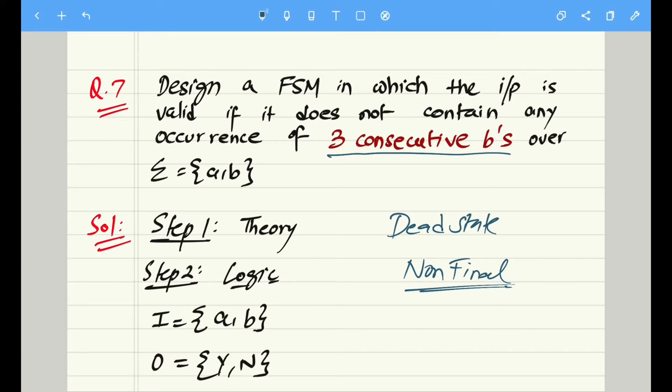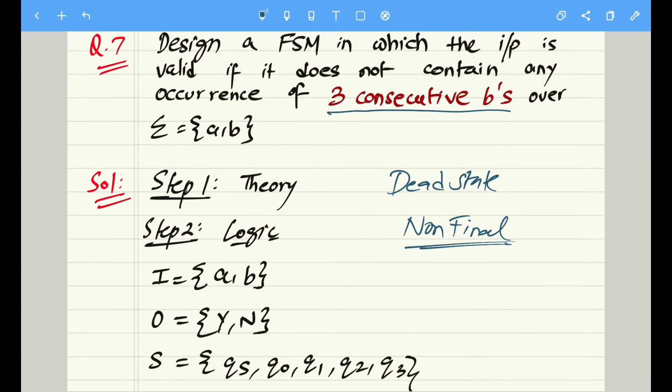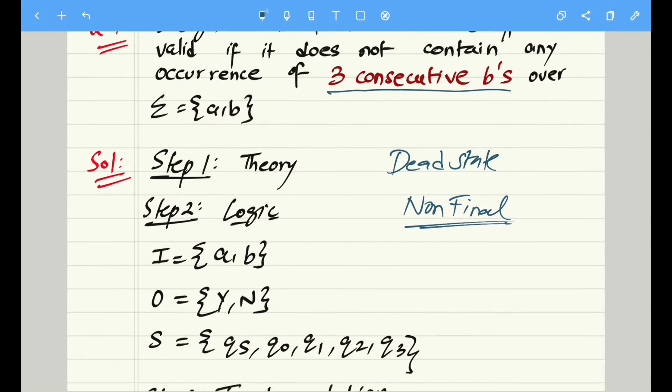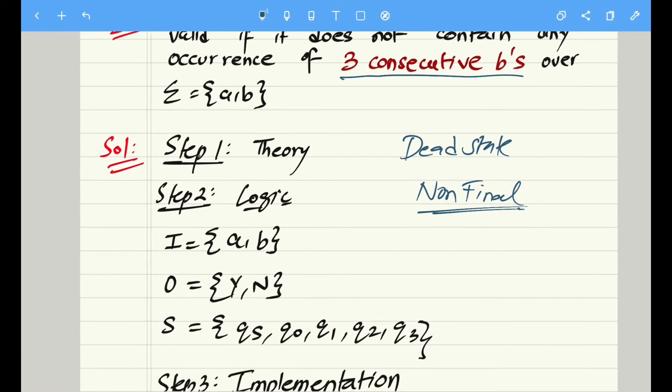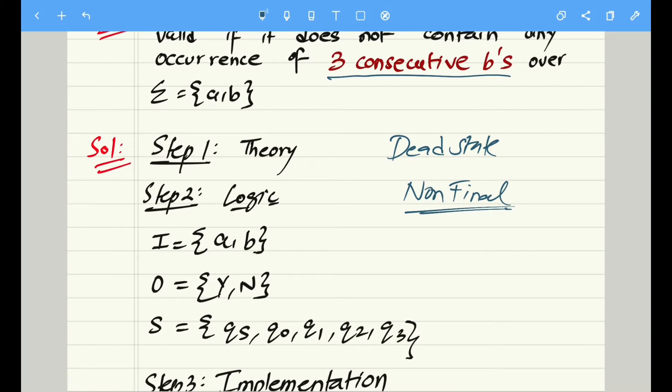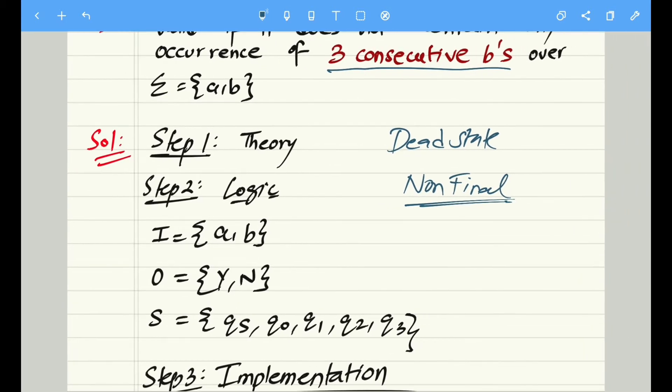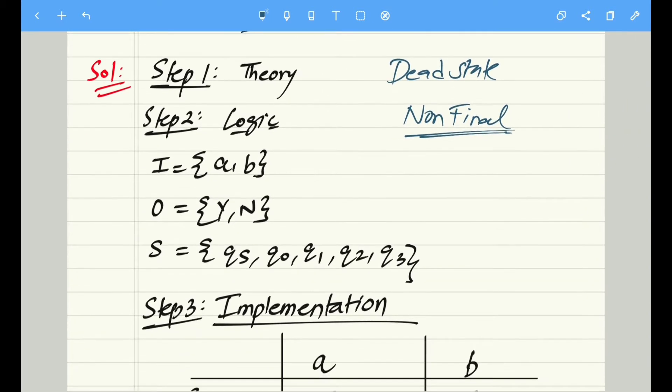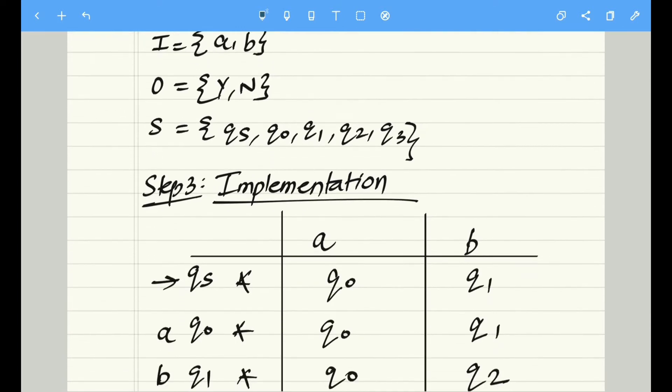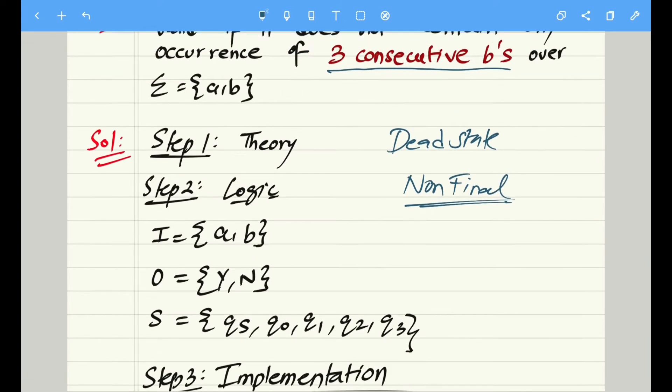Step one is the theory - it remains the same. Step two is all about the logic. In this case, the inputs are a comma b and the output remains same, that is yes or no. And similarly, we can fill up the states after completing the implementation.